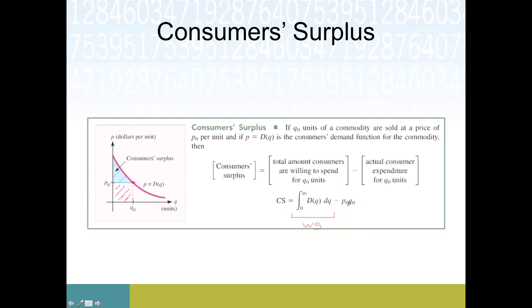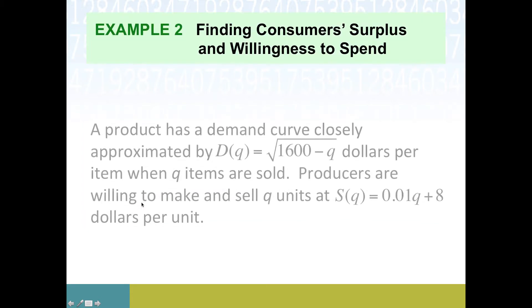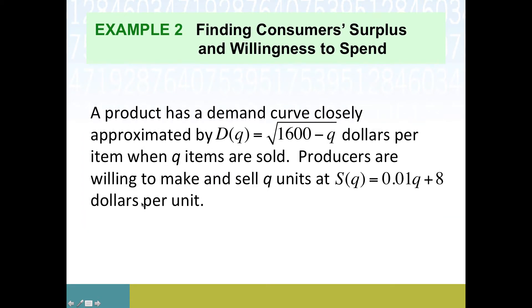What we start with is the willingness to spend, the entire area underneath the demand curve, but then subtracting out this little rectangle down below because those aren't realistic prices anyway. Let's try it with an example. We'll say it has a demand curve that looks like D(q) = sqrt(1600 - q), this is in dollars per item when q items are sold.